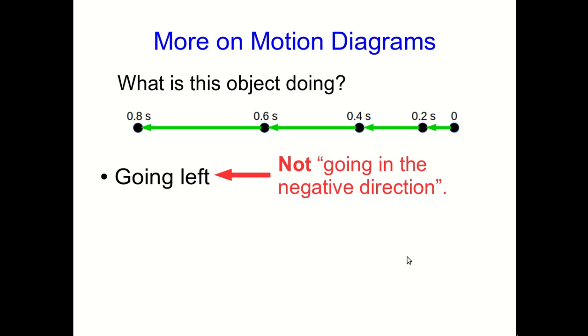Why is it wrong? Well, because we haven't defined our axes. We don't know anything about how to assign numbers to the positions or the velocities yet. And so it's not correct to say it's going in the negative direction. You can also see that it's moving in a straight line, and you can also see that it's speeding up.